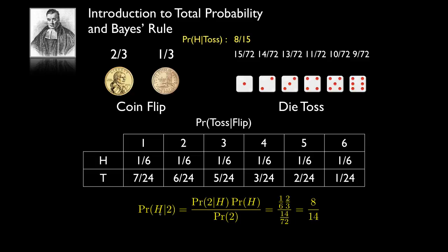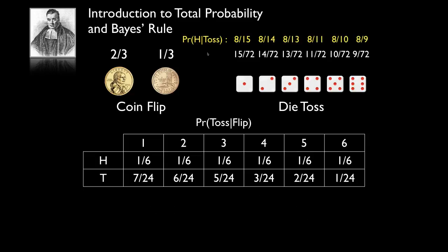Similarly, the probability of heads given a die toss of two is one-sixth times two-thirds divided by 14 over 72, which is eight-fourteenths. Working this out for every outcome: heads given three is eight-thirteenths, given four is eight-elevenths, given five is eight-tenths, and given six is eight-ninths. The probability of tails is one minus each of these: seven-fifteenths, six-fourteenths, five-thirteenths, three-elevenths, two-tenths, and one-ninth respectively.